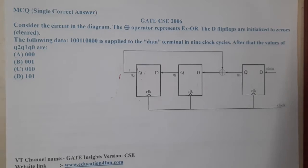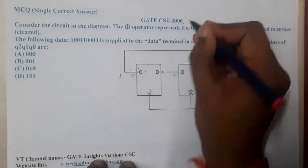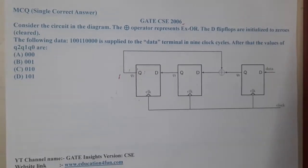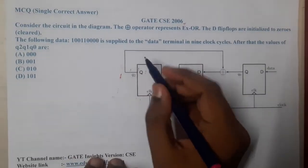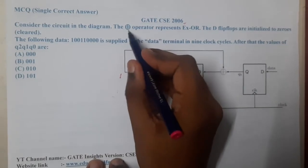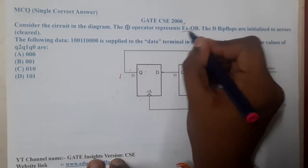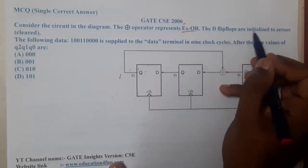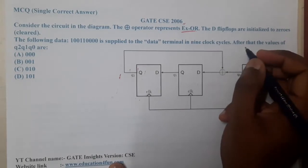Hello guys, we are back with our next lecture. In this lecture let's go through the next question. This question belongs to GATE CSE 2006. The question is: consider the circuit diagram. The plus circle is nothing but XOR operation. The D flip-flops are initialized to zeros.